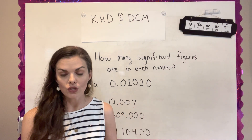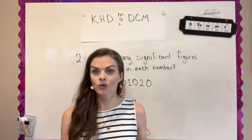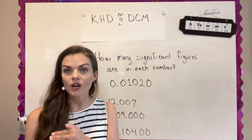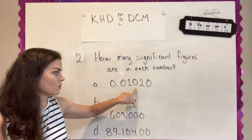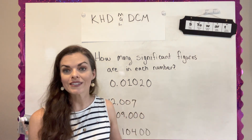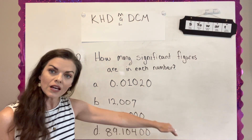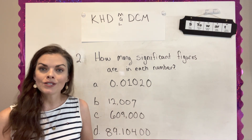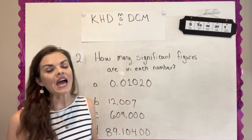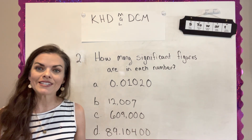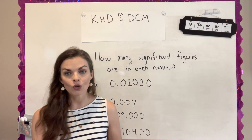There are three rules for significant figures, and they're on the bottom of page four. First, all non-zero numbers are significant — any digit one through nine. Second, a zero is significant if it's between two non-zero numbers. Third, a zero is significant if it's at the end of a number and to the right of a decimal point. When we do calculations, these rules are going to help you know how to round your answers.